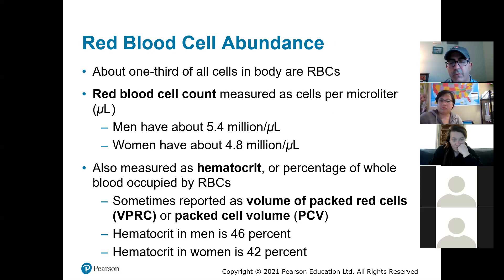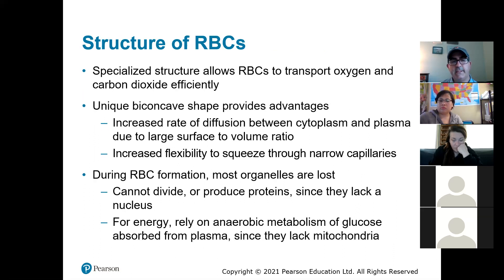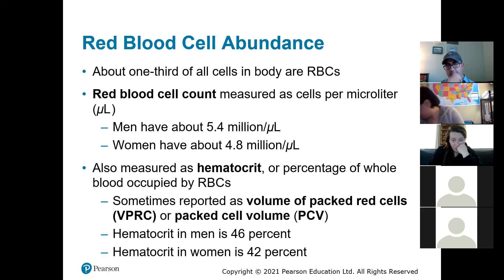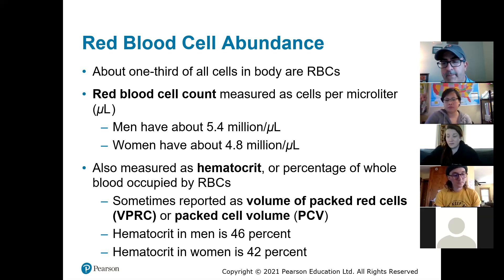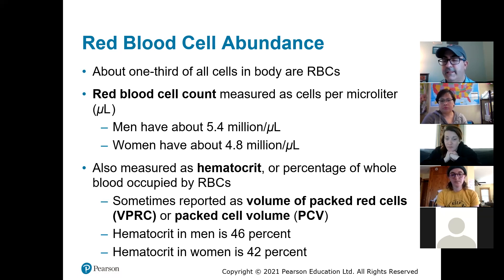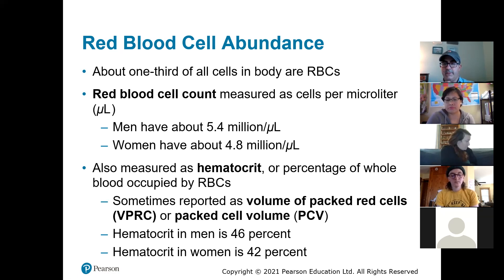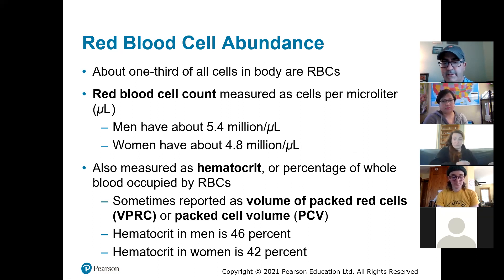A hematocrit is often used by doctors to make sure you don't have a lot fewer or a lot more red blood cells than average. What they do is take a blood sample, put it in a tube, and spin it in a machine called a centrifuge. When you spin something really fast, the heavier things settle to the bottom. From the proportion of the tube taken up by red blood cells, they can estimate how many red blood cells you have in your body. Men usually have more red blood cells than women.